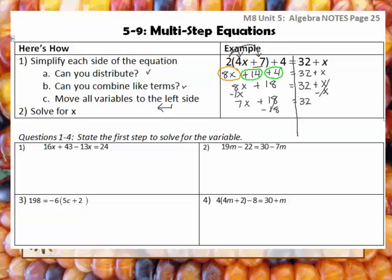I need to get rid of the constant, so I'm going to subtract 18 from both sides. I'm left with 7x is equal to 14, and then I'm going to divide by 7 to get x by itself, and I'm left with x is equal to 2 for my final answer. So make sure you're doing the distributive property first, then check for combining like terms, then check for variables on both sides to move your letters to the left.